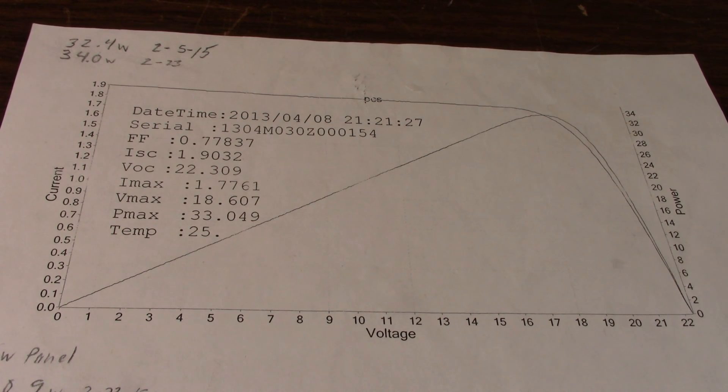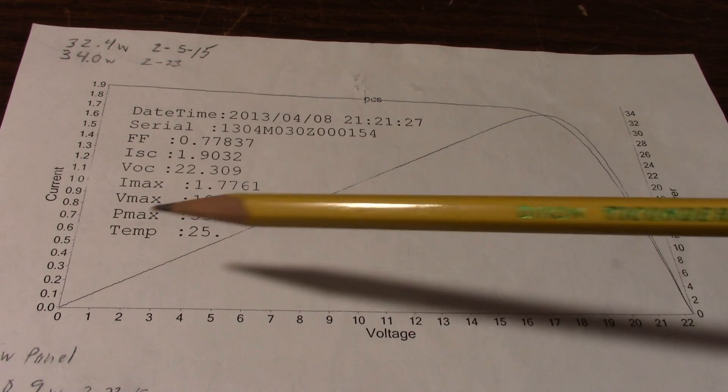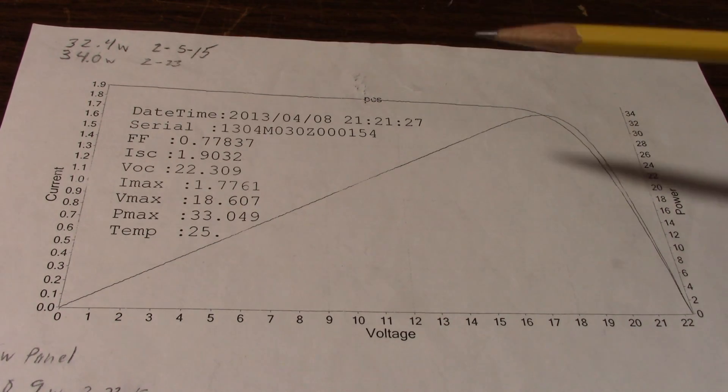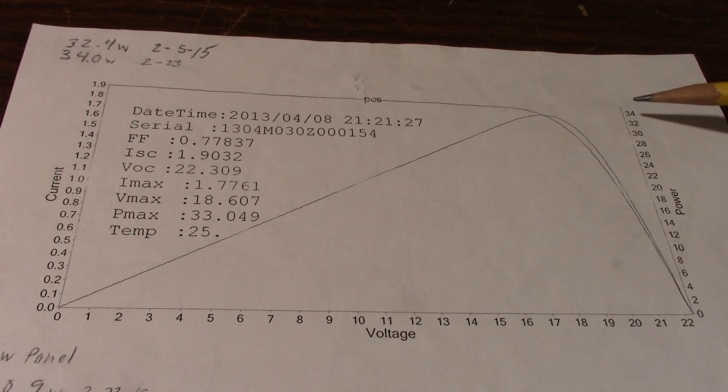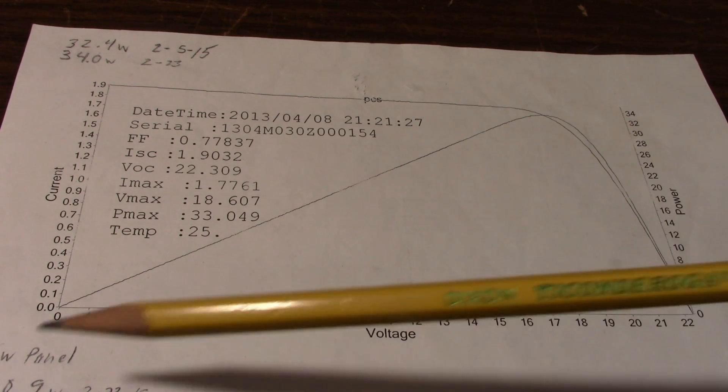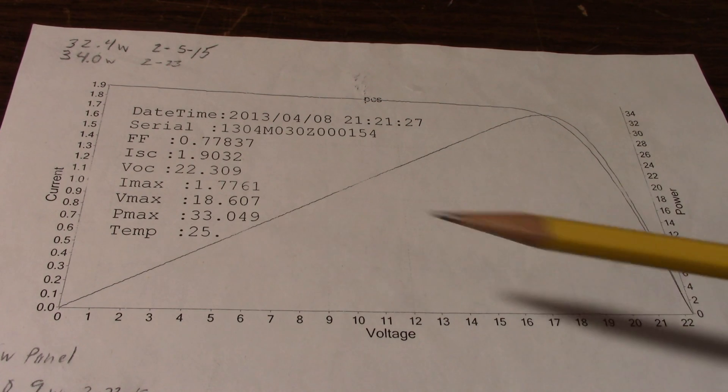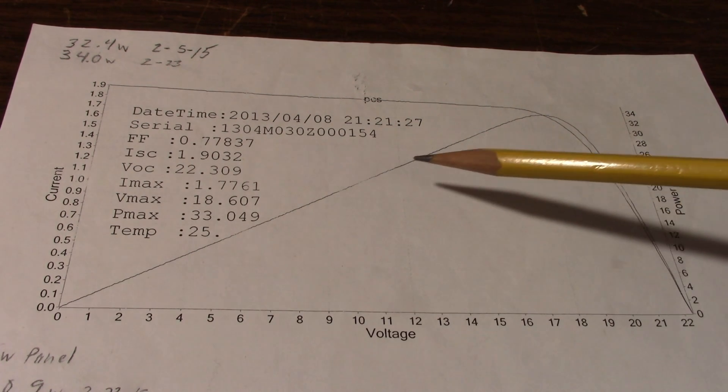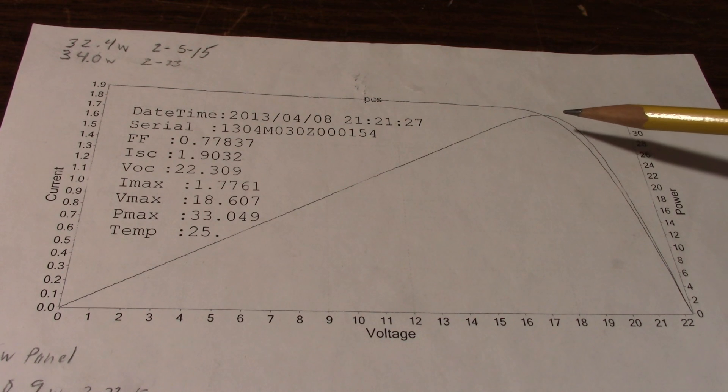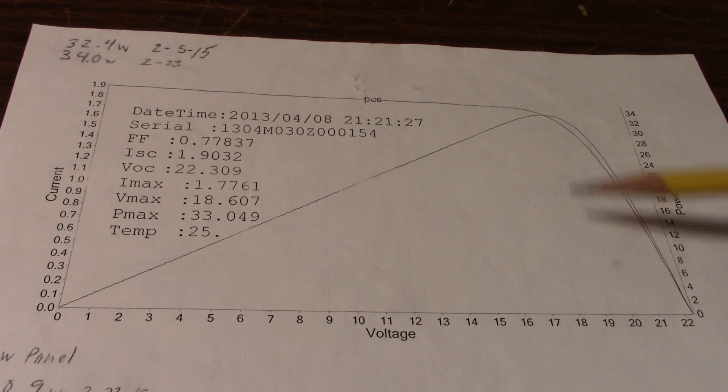A couple other panels I bought did not include these but it shows the current here and on this side the power for the curve showing the power and of course the voltage. And this line that gradually rises up and then peaks and then falls pretty steeply is the power curve. And with this panel somewhere around 19 volts the power peaks up at around 33 watts. So it's normal to get a little bit more power than rated if it's a decent panel.